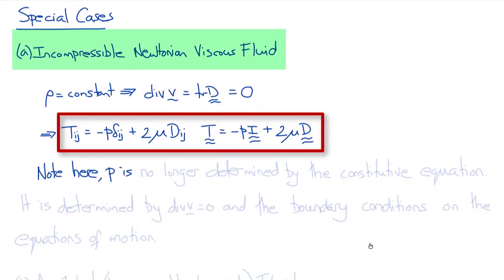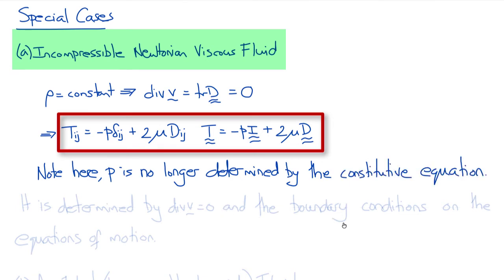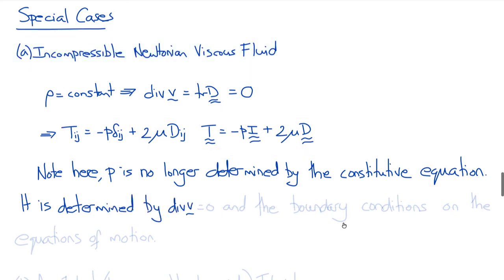Note that the pressure p is no longer determined by the constitutive equation at all. It is determined solely by the incompressibility condition and the boundary conditions imposed on the equation of motion. In practice, in an incompressible fluid flow, the external pressures determine the hydrostatic pressure p.